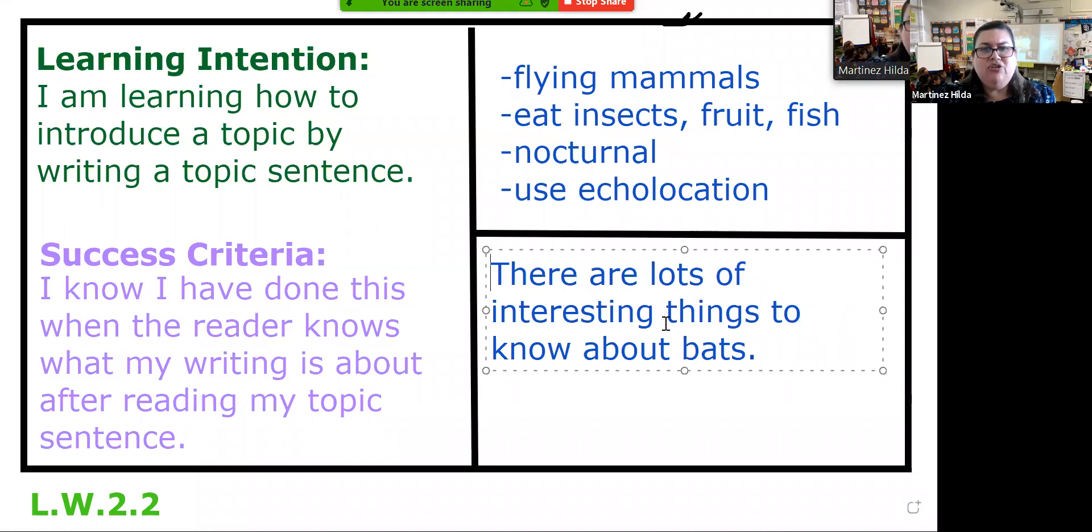When I look at that sentence, boys and girls, I want it to give my reader a clue as to what the rest of my writing is going to be. The rest of my writing is going to have sentences that include these cool facts and key details that we pulled from the book. But we want to make sure to start it off with a sentence that they know what they're going to be reading about. So let's read it one more time together: There are lots of interesting things to know about bats.